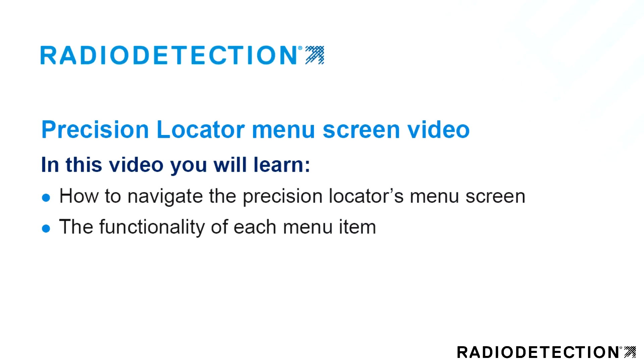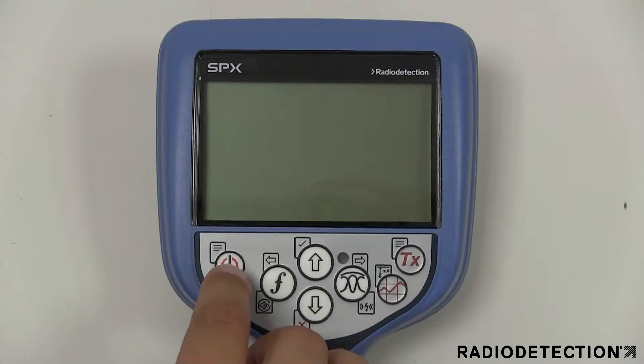In this video you will learn how to navigate the precision locator's menu screen and the functionality of each menu item. The precision locator settings are accessed via the menu where it is possible to change settings according to your personal preferences and operating requirements.